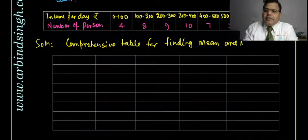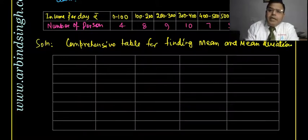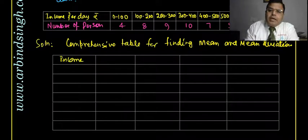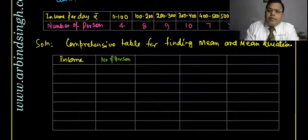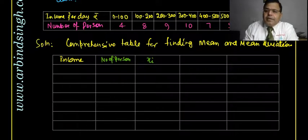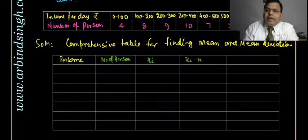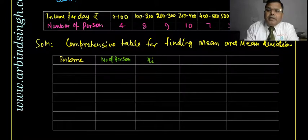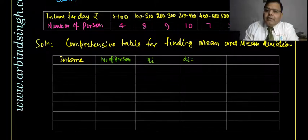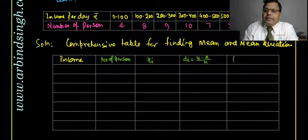The comprehensive table for finding mean and mean deviation has the following columns: income per day, number of persons (fi), class mark xi, di = (xi − a)/h, and fi·di.